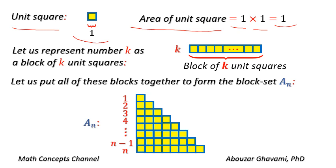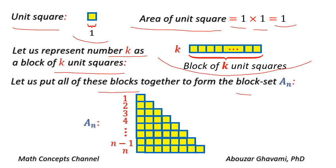Let us represent natural number k as a block of k unit squares. Let us put all of these blocks together to form the block set An.